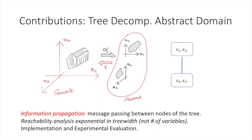We show how you can propagate information from one tree node to another. Using this idea of message passing, we can make this representation much more refined. We show a reachability analysis that is exponential in the tree width, not in the number of variables. We also show some implementation and experimental evaluation. I hope to see you in my talk.